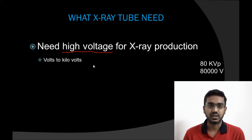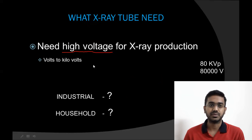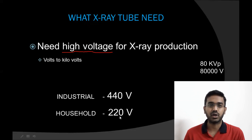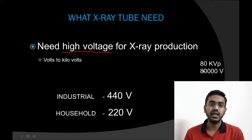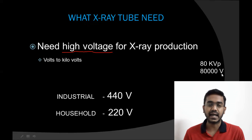What will be the incoming voltage from the power supply? Just pause the video and comment below. For household, it will be 220 volts, and in case of industrial, it will be 440 volts. We need 80,000 volts for that chest X-ray, but we are having only 220 volts. In order to convert 220 volts into 80,000 volts, we need an equipment called a transformer.